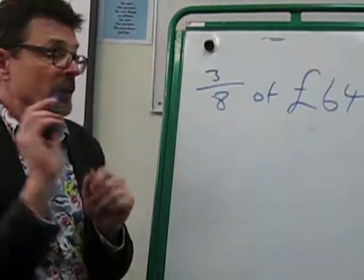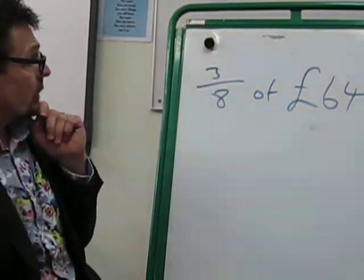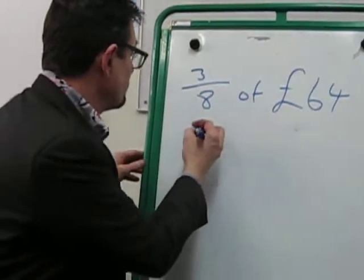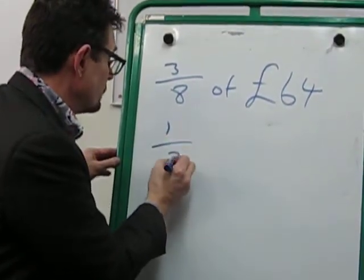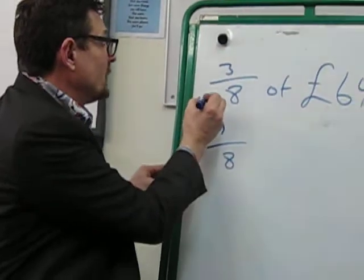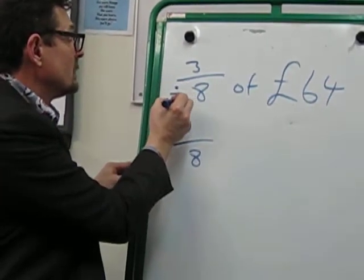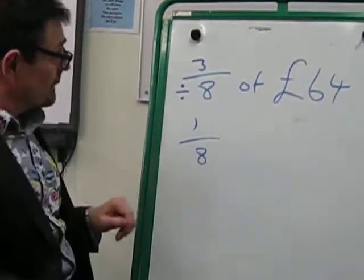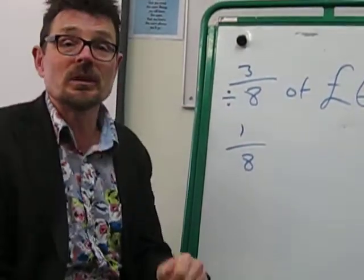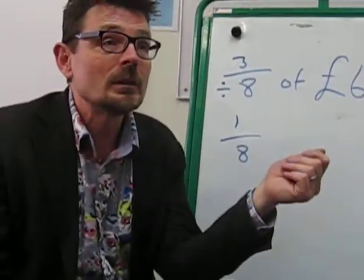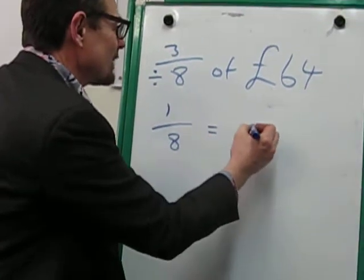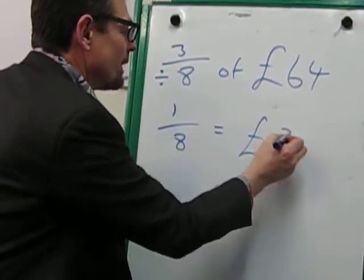So our first step is to find what 1 eighth of 64 pounds is. The way we do this is we divide by the denominator. So 64 divided by 8 equals 8. Fantastic. So 1 eighth is going to equal 8 pounds.